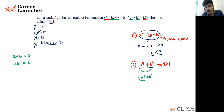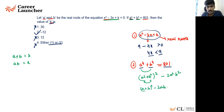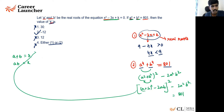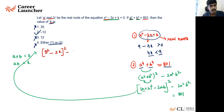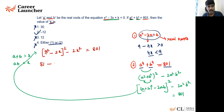We use the identity: a⁴ + b⁴ = (a² + b²)² − 2a²b². And a² + b² = (a + b)² − 2ab. Substituting: a² + b² = 9 − 2k. So a⁴ + b⁴ = (9 − 2k)² − 2k² = 801. Expanding: 81 − 36k + 4k² − 2k² = 801.